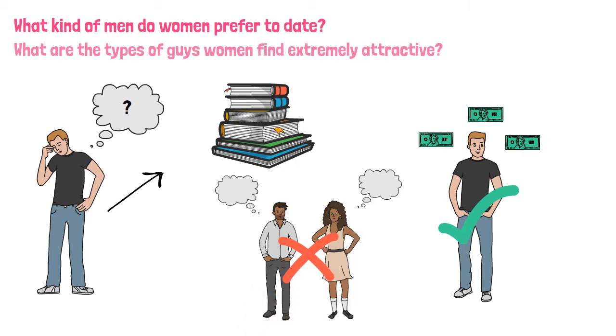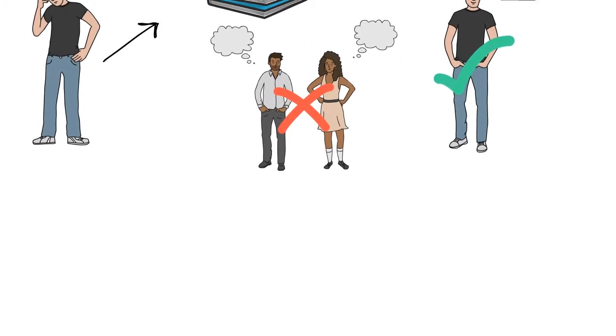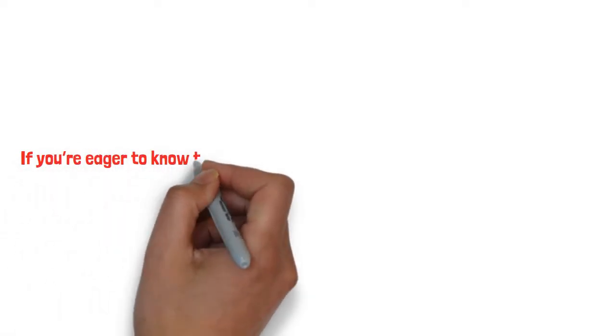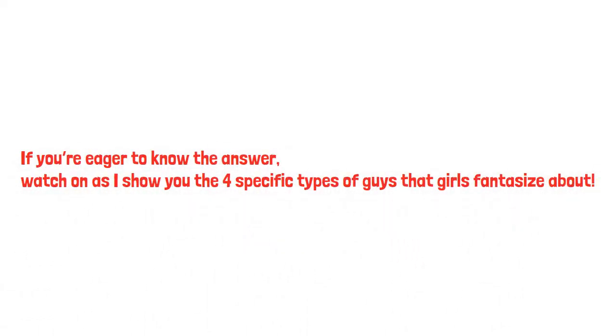Well, I'll give you a quick tip here. It's not just about looks and wealth. There are some macho attributes too that make any lady go weak at the knees. Often it's the right blend of physical, mental, and emotional attributes that make a man highly irresistible to women. If you're eager to know the answer, watch on as I show you the 4 specific types of guys that girls fantasise about.